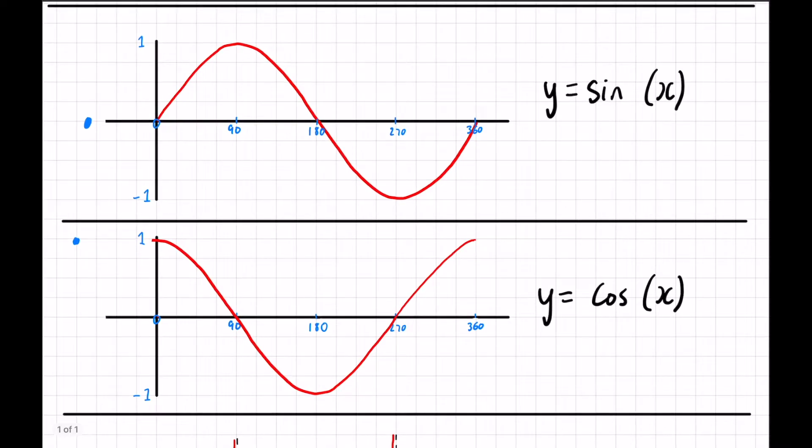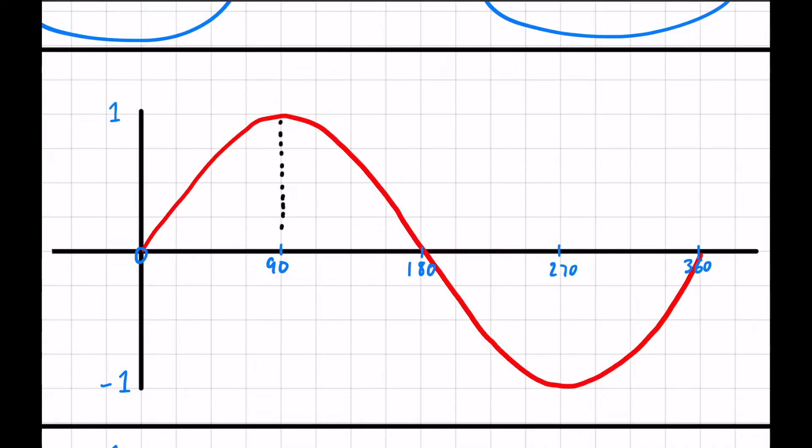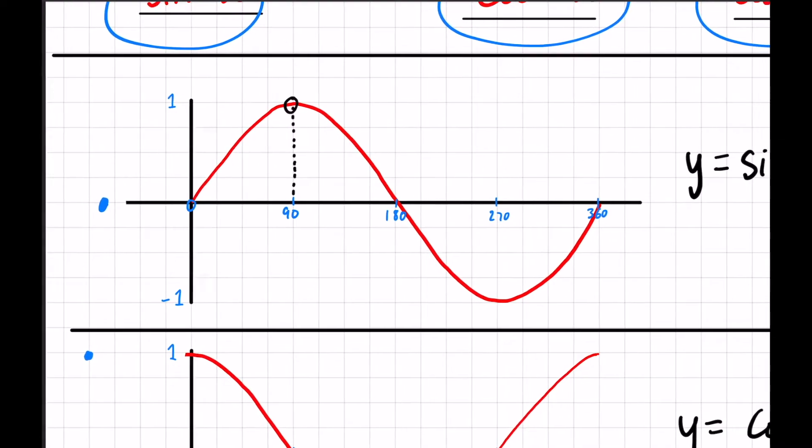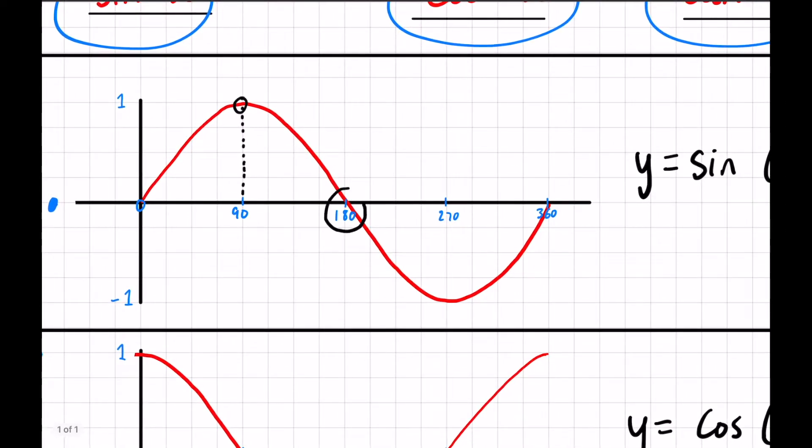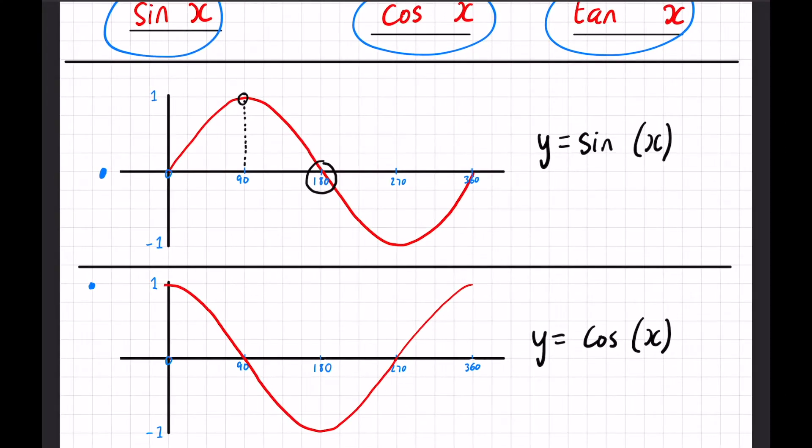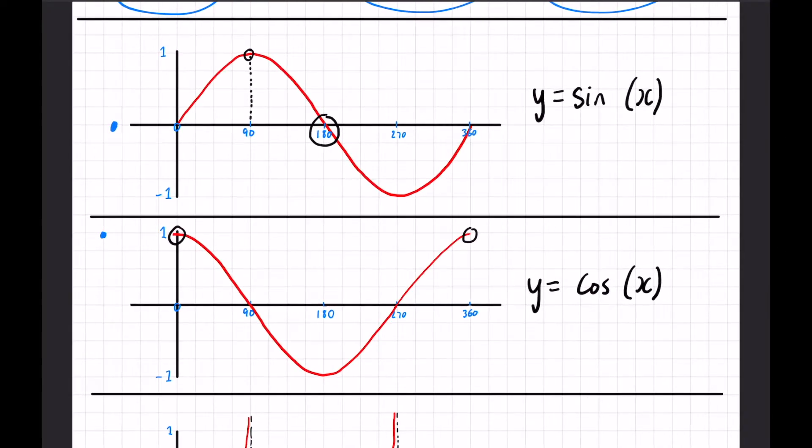For example sin of 90 we can see is going to be 1. And if you put it into your calculator you can work that out as well. It will give you exactly the same thing. Similarly sin of 180 is going to be 0. And let's say we've got cos of 360 or cos of 0, both the same thing. They will both make 1. So the values for these will always be inside the range of 1 to minus 1.